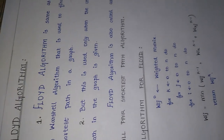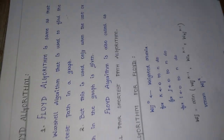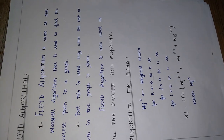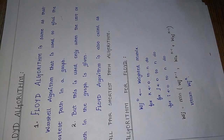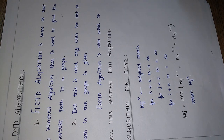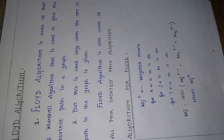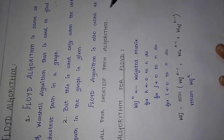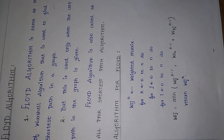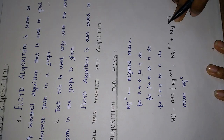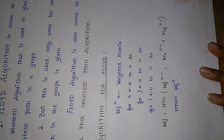Now we are going to see about Floyd's algorithm. Floyd's algorithm is the same as Warshall algorithm — it is used to find the shortest path in a graph. However, this is used only when the cost or path in the graph is given. Floyd's algorithm is also called the all-pairs shortest path algorithm.